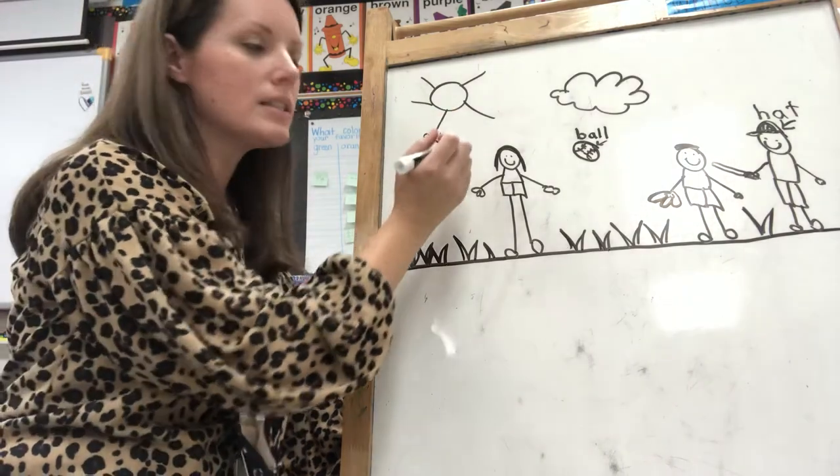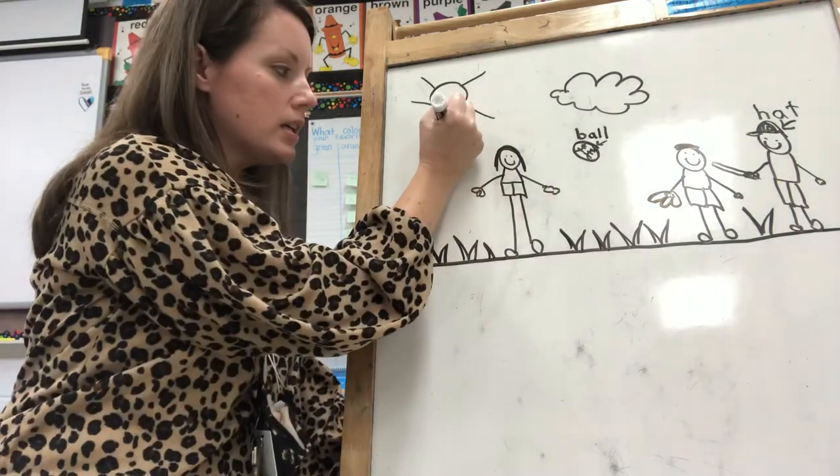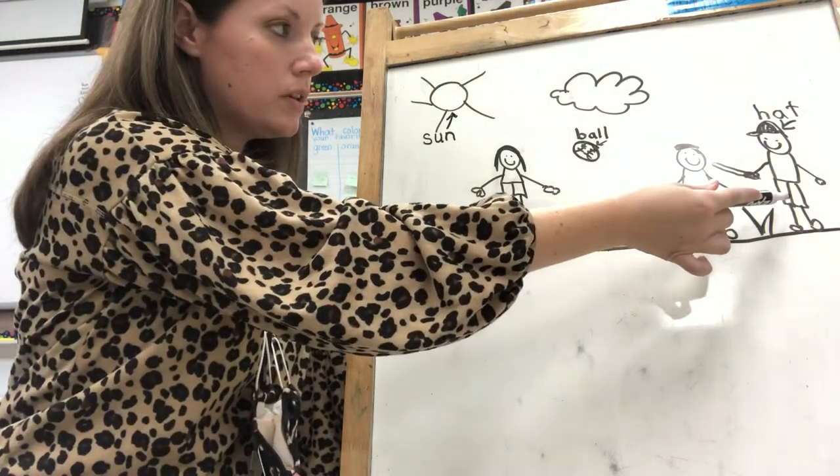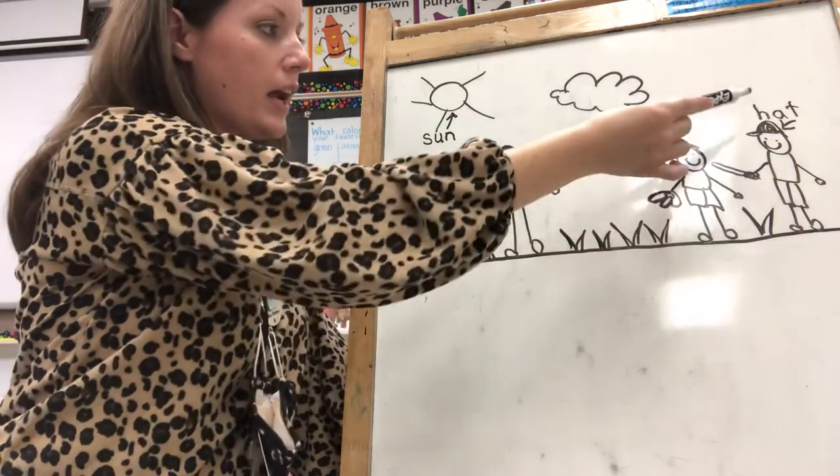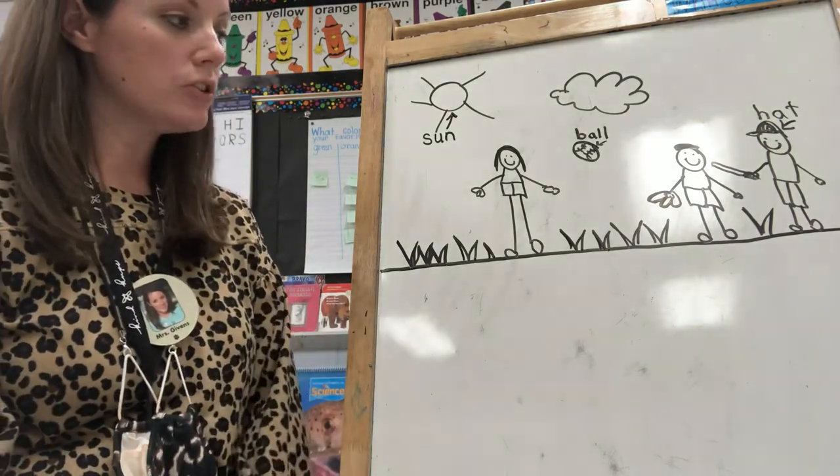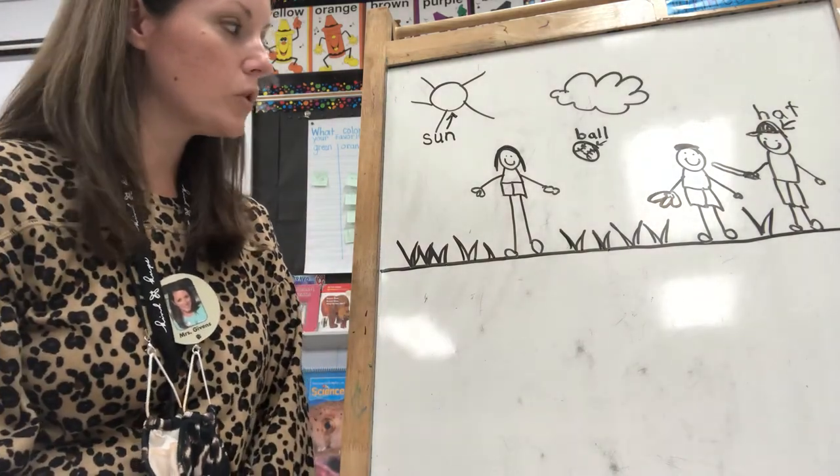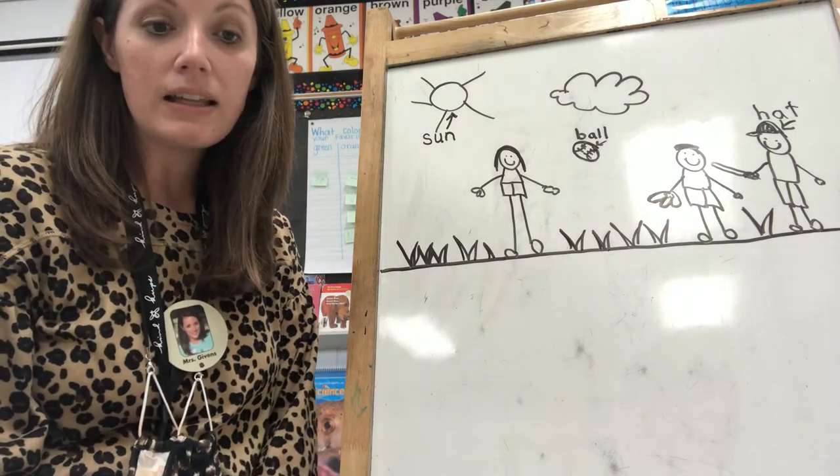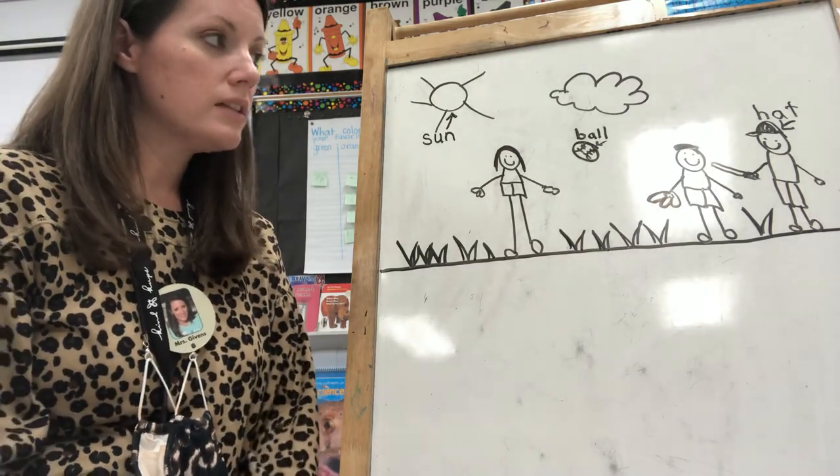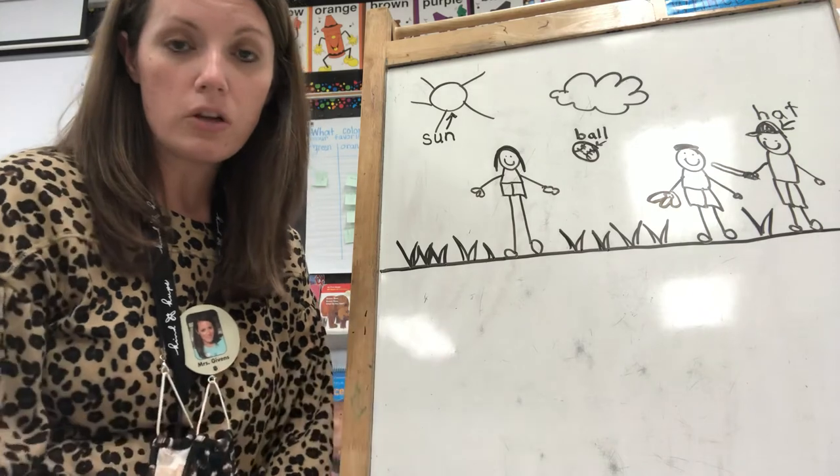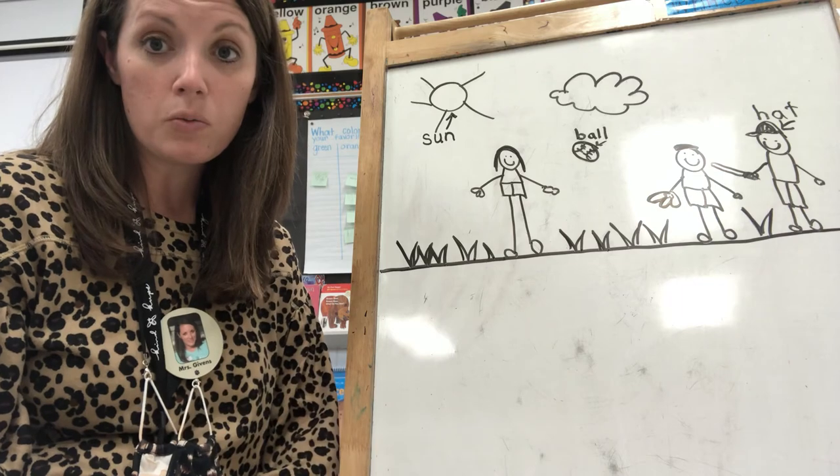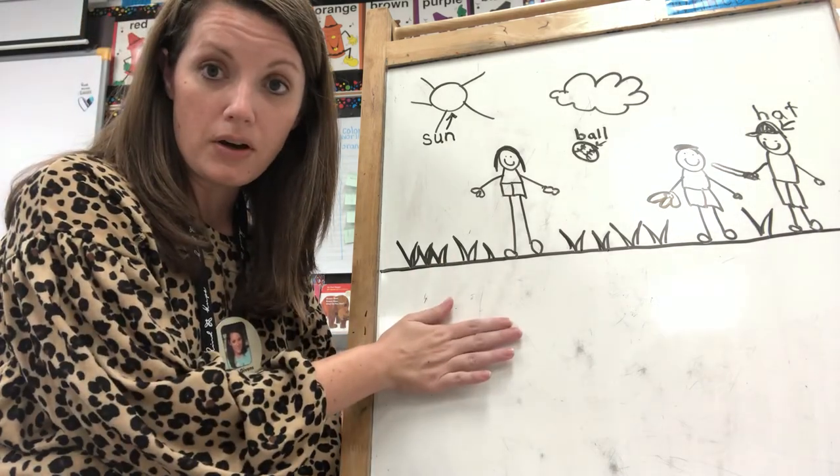So today I added some details. I added a whole other person and I added some labels. Adults, the child can sound out the label and just write the sounds that they hear, or you can help them with the spelling. At least let them sound out and write the first sound that they hear on their own. So I'm gonna let you guys take your picture, add your details and add your labels. I'll see you tomorrow. Tomorrow we're gonna add the words to our story at the bottom. See you tomorrow!